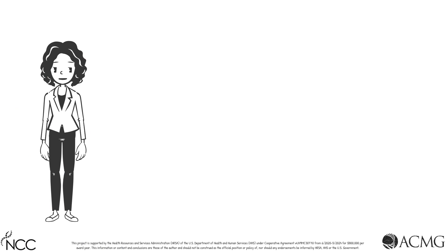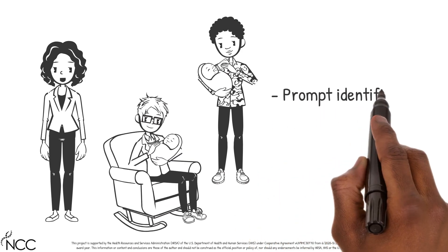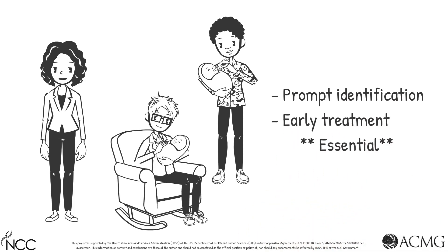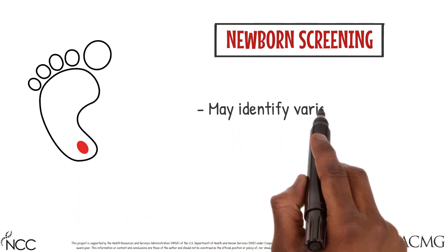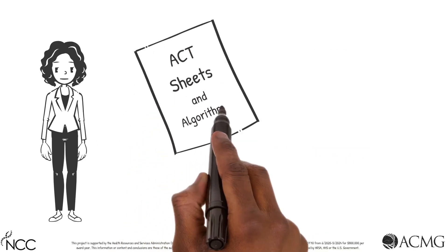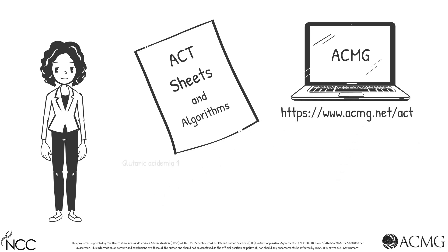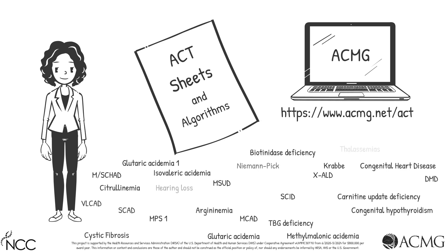Before we end today's session, let's have a quick review. First, PAH deficiency is a serious condition, and identification of affected individuals is essential for administration of early treatment. Second, newborn screening may identify numerous forms of PAH deficiency. Third, Act Sheets are freely available on the ACMG website to review in the event of a screen-positive result. In addition to PAH deficiency, Act Sheets are available for many other conditions that can be identified through newborn screening.